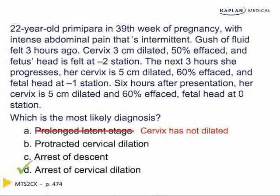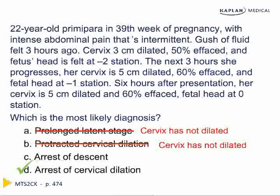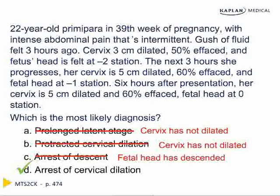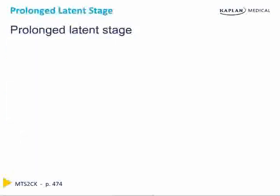Here are a few important definitions. A prolonged latent stage is one that takes more than 20 hours in a first-time mom to reach 4 cm dilation. Protracted cervical dilation is when the first-time mom does not have dilation greater than 1.2 cm per hour in active labor. Arrest of descent is when the fetal head does not move down in the birth canal.